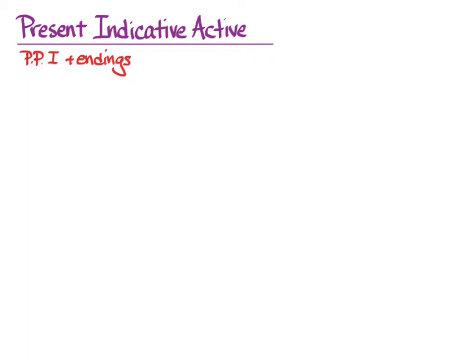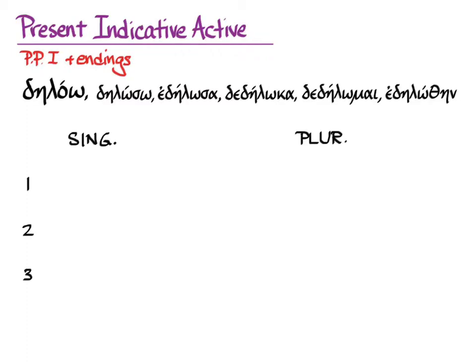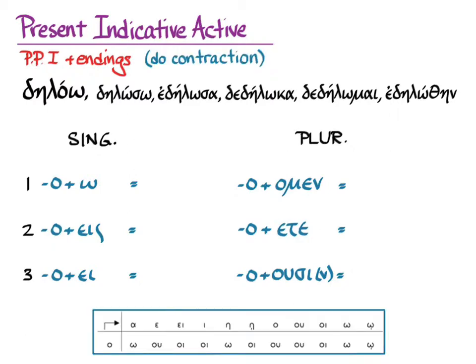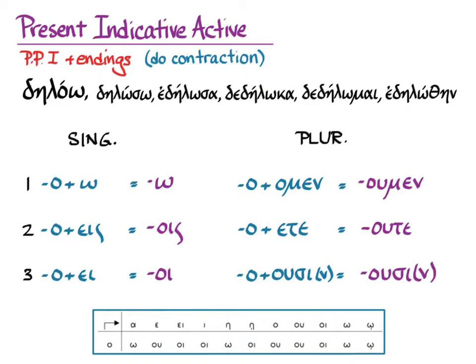The rule for the present indicative active is to take the first principal part and add the endings. In each person and number, we'll need to have the omicron of the stem and the endings that we know, then figure out how to contract those. Here I've got the part of the contraction chart concerned with omicron combinations. Following the guidelines, those contractions result in: ō, ois, oi, oomen, oota, and oosi. The accents will be recessive, but with special rules for contracted verbs, which we'll go over next.